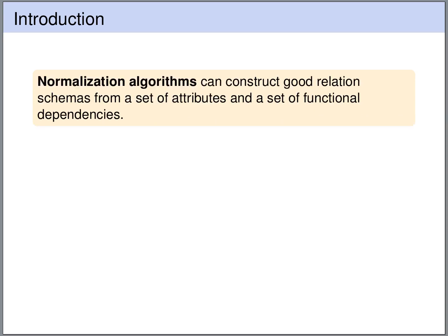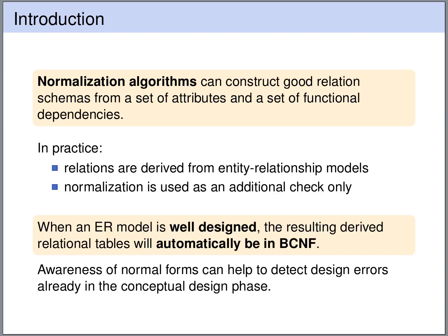We will also see that there are normalization algorithms that can construct good relational schemas from a set of attributes and a set of functional dependencies. In practice we will usually derive our relational models and schemas from conceptual models such as entity-relationship diagrams. Normalization is then used only as an additional check to see whether the derived design is good.